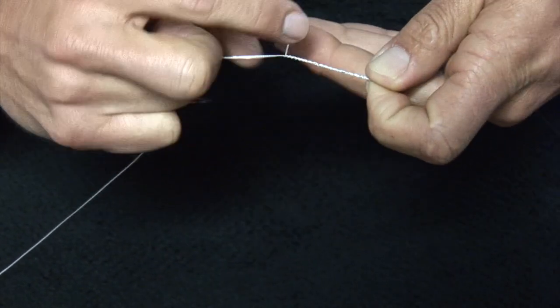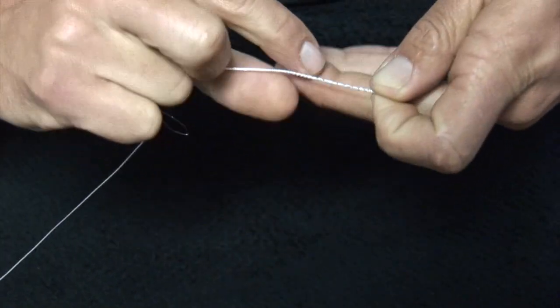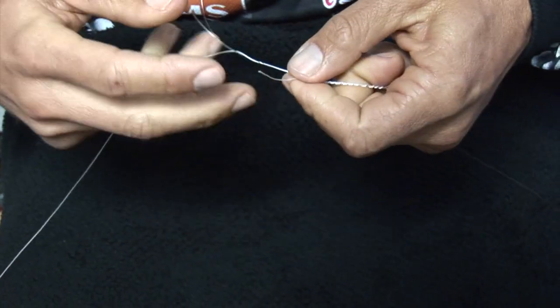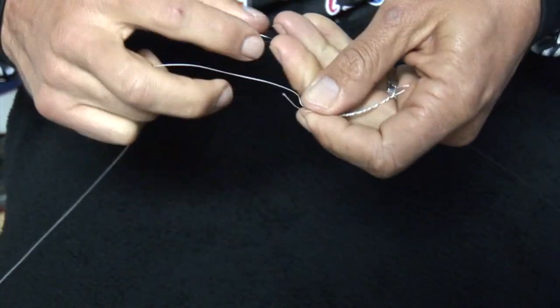This one when I do it single, you can do this one double too. When I single this one I do like 20 to 24 wraps, so it's a lot of wraps. And it goes by pretty quick if you're doing it how I showed you.